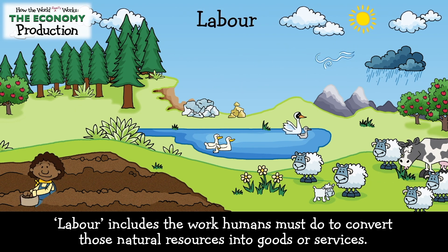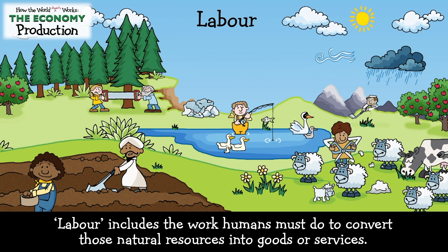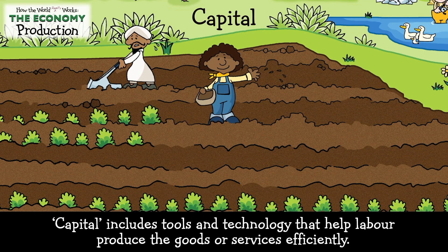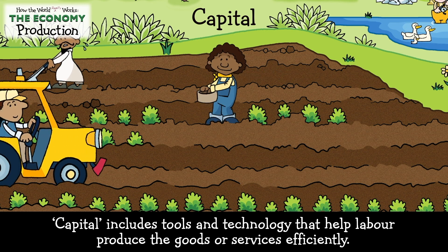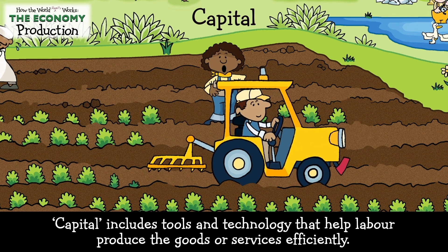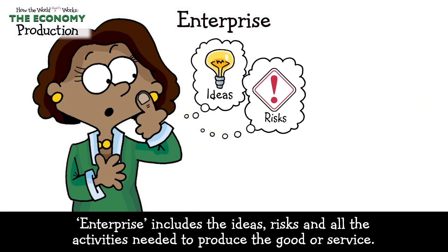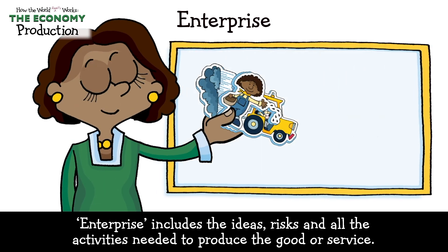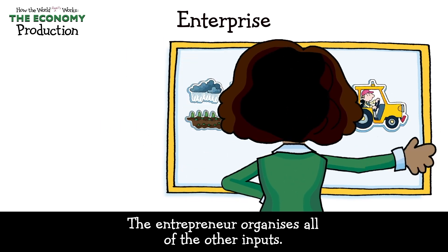Labour includes the work humans must do to convert those natural resources into goods or services. Capital includes tools and technology that help labour produce the goods or services efficiently. Enterprise includes the ideas, risks and all the activities needed to produce the good or service. The entrepreneur organises all of the other inputs.